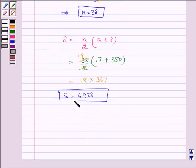So, S is equal to 6973. Hence, N is equal to 38 and sum is equal to 6973.